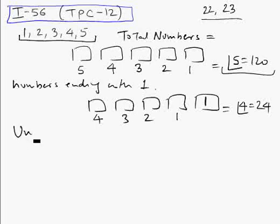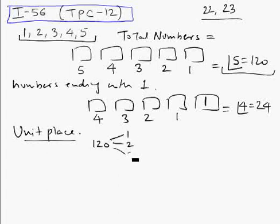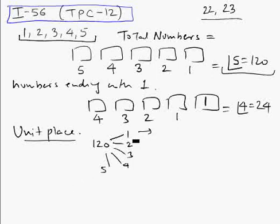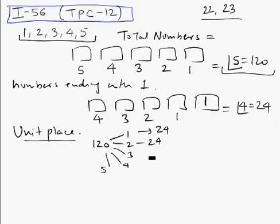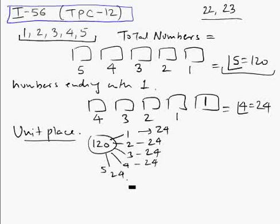By symmetry, in the unit place, out of all 120 numbers, all five digits will appear an equal number of times. Numbers ending with 1 will be one-fifth of 120, which is 24. We can find this mathematically or by symmetry: simply divide the total numbers by 5 because there are five digits.